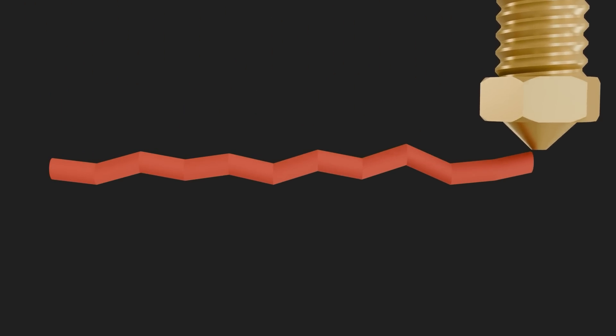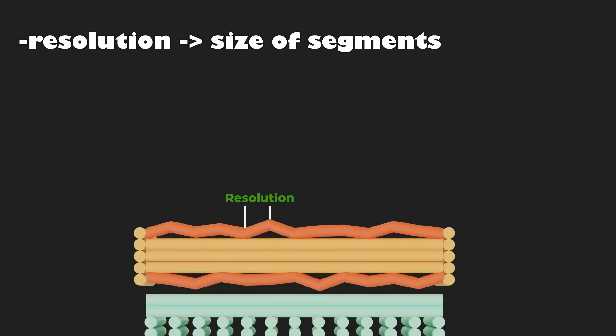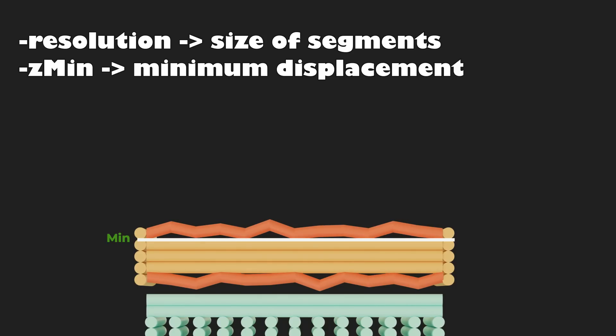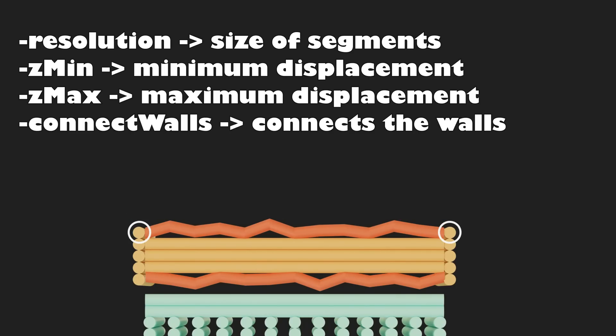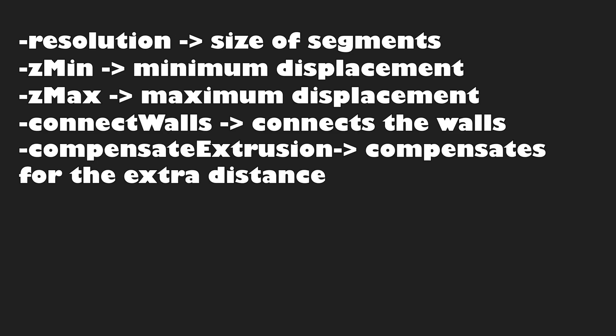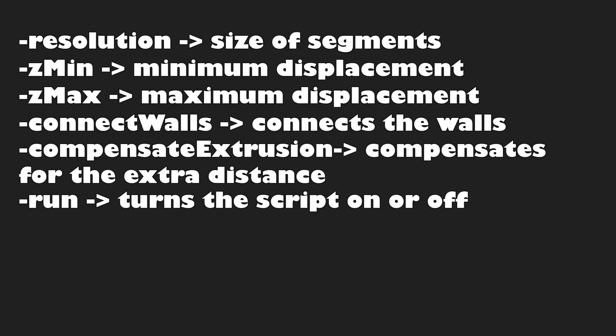In the last version you were able to manipulate it with the following parameters: -Resolution followed by a number sets the segment size of the fuzzy segments; -SetMin followed by a number sets the minimum value of displacement; -SetMax followed by a number sets the maximum value of displacement; -ConnectWalls followed by 1 or 0 makes sure that the lines are connected to the walls; -CompensateExtrusion followed by 1 or 0 calculates how much more filament needs to be extruded to cover the additional distance; and -Run followed by 1 or 0 activates or deactivates the script.